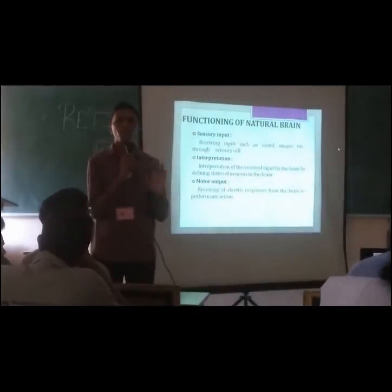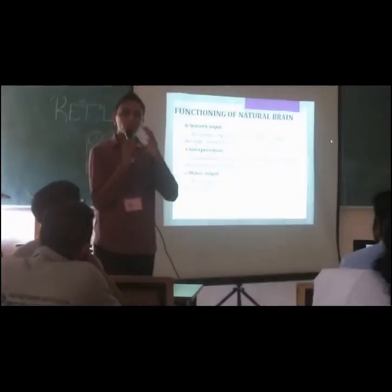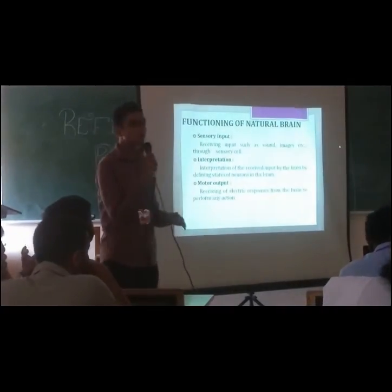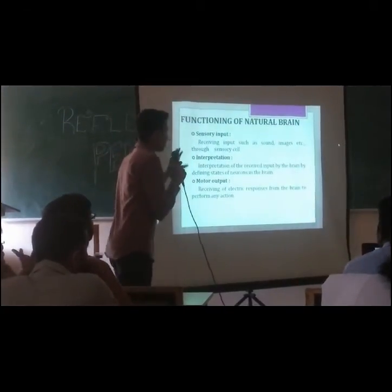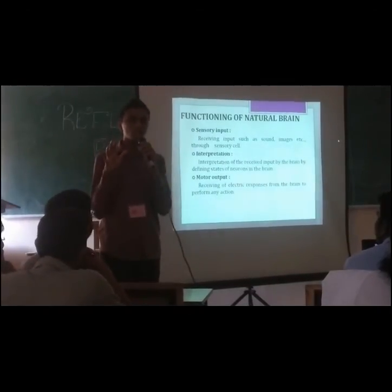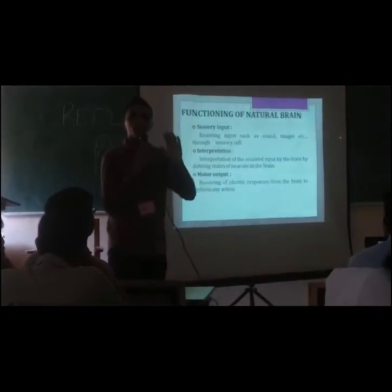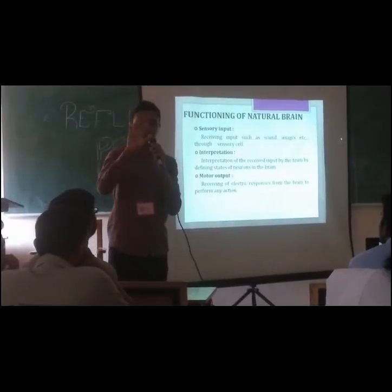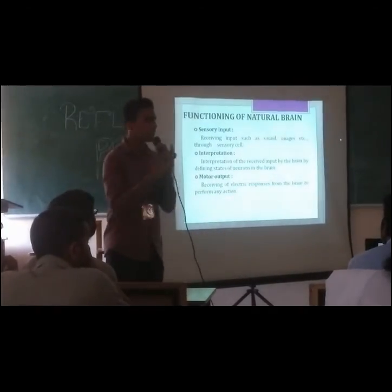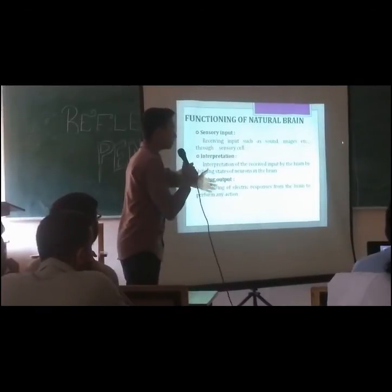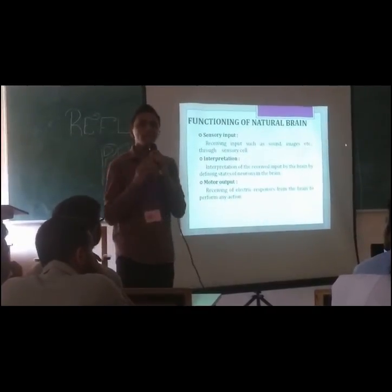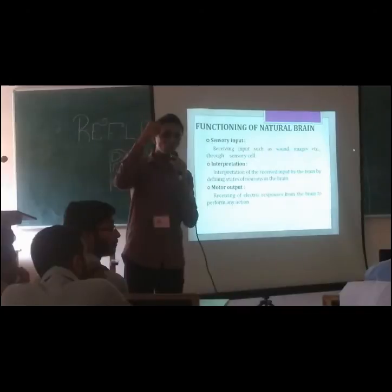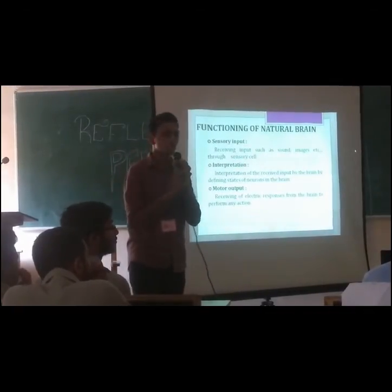Now we are speaking about the functioning of the brain. It is important to learn about the actual brain first, then only we can move to artificial intelligence. For sensory interpretation — our five sensory organs. Interpretation means if someone asks five plus one, the brain calculates and gives the result. For motor output, the brain sends electrical responses to perform actions. Electric pulses are used for communication between neurons.